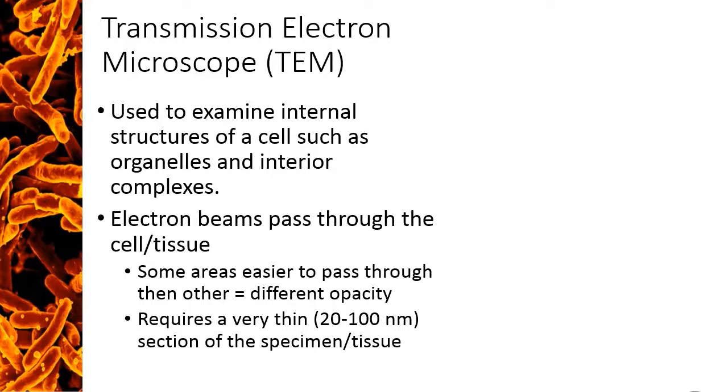Transmission electron microscopes are used to examine internal structures of cells, such as organelles. This means that instead of scattering off the top, the electrons pass through the specimen, leading to different opacity based on the ease of transfer. To do this, you must have very thin, less than 100 nm slices of the cell or tissue you want to study. You can typically tell if an electron micrograph was made using an SEM or a TEM.